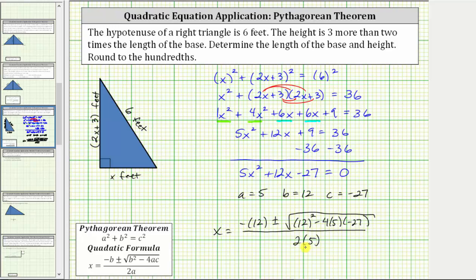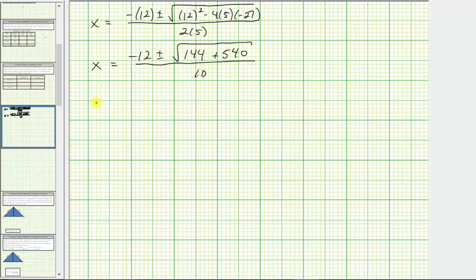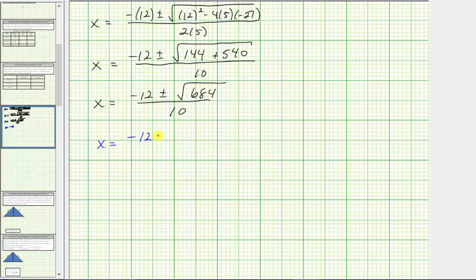Continuing to simplify: in the numerator we have negative 12, plus or minus the square root of 12 squared, which is 144, minus four times five times negative 27, which is minus negative 540, equivalent to plus 540. All divided by two times five, which is 10, giving us x equals negative 12 plus or minus the square root of 144 plus 540, which equals 684, all divided by 10. Because of the plus and minus, we have two solutions: x equals the quantity negative 12 plus the square root of 684 divided by 10, and x equals negative 12 minus the square root of 684 divided by 10.